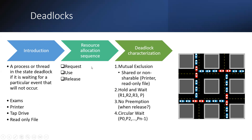So first there is the entry section, then the critical section, then execution is performed, then the exit section. If we are in the entry section, we make a request for the resources. After execution is complete, that particular process is going to release the resources — resource allocation, request, then the critical section.